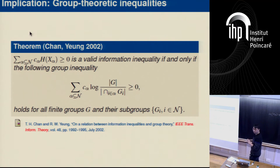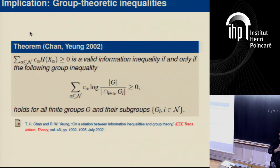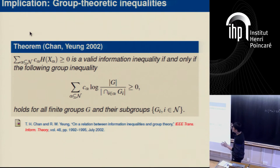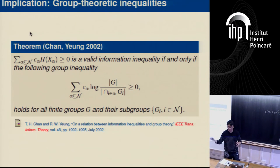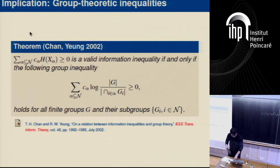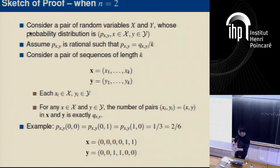That is the first direction. Interestingly, the converse is also true: a group inequality that holds for all finite groups implies the corresponding information inequality. The converse is more complicated, but let's explain that as well.